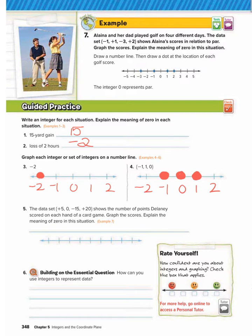Number five, the data set 5, 0, negative 15, and 20 shows the number of points Delaney scored on each hand of a card game. Graph the scores. Explain the meaning of zero in the situation. So now we have some bigger numbers here. So to fit this on my number line, I'm going to go by five.